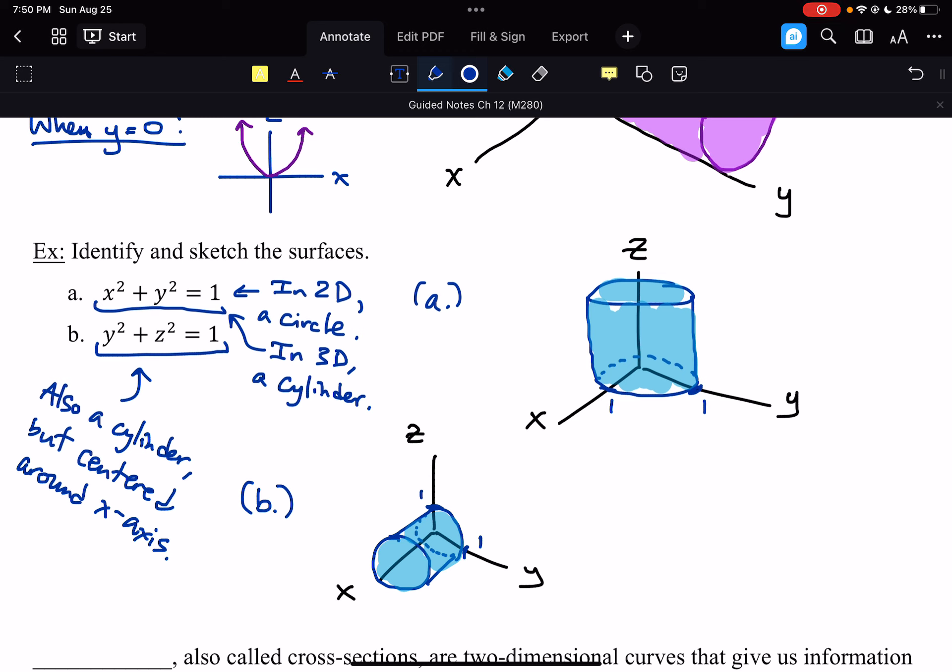The x squared plus y squared equals 1 gives us a cylinder that opens upward. And then y squared plus z squared equals 1 gives us one that opens down the x axis instead.